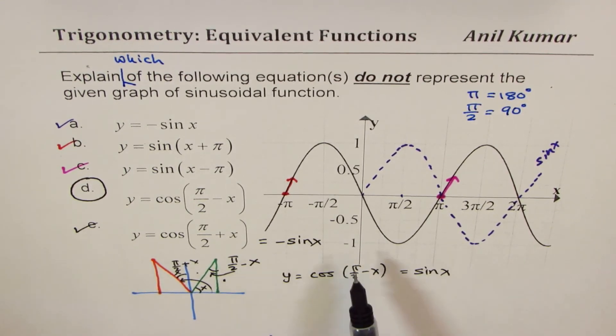So we conclude from here that the given graph could be written as y equals minus sine x, y equals sine x plus pi, y equals sine x minus pi, or y equals cos of pi by 2 plus x. So this equation which does not represent is d. So I hope that is absolutely clear. Thank you and all the best.